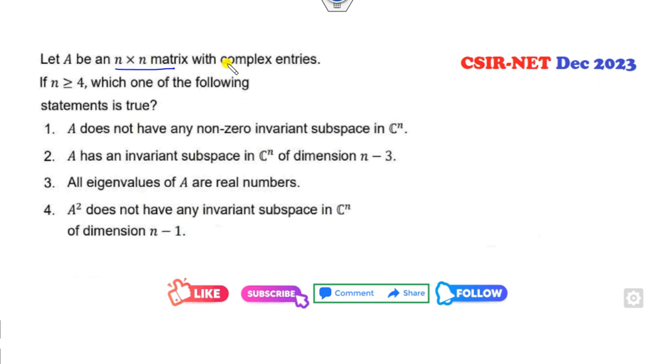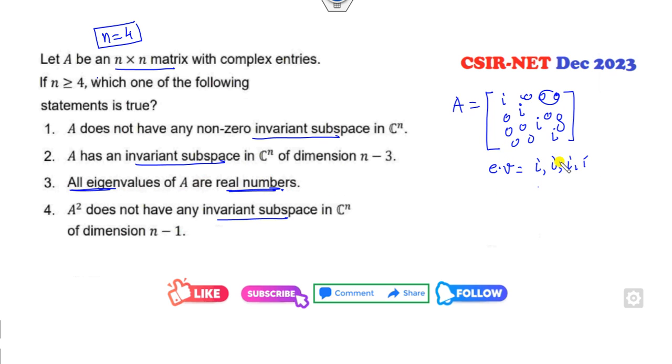F is an n × n complex matrix. N is given here. Which of the following is true? Invariant subspace, invariant. All the eigenvalues are real. This is clearly false. If I choose N = 4, then I can choose any complex entries like i, i, i, and i, rest values are 0. Clearly, what are the eigenvalues? Eigenvalues are i, and you can see all eigenvalues are not real numbers. So this option is cancelled.